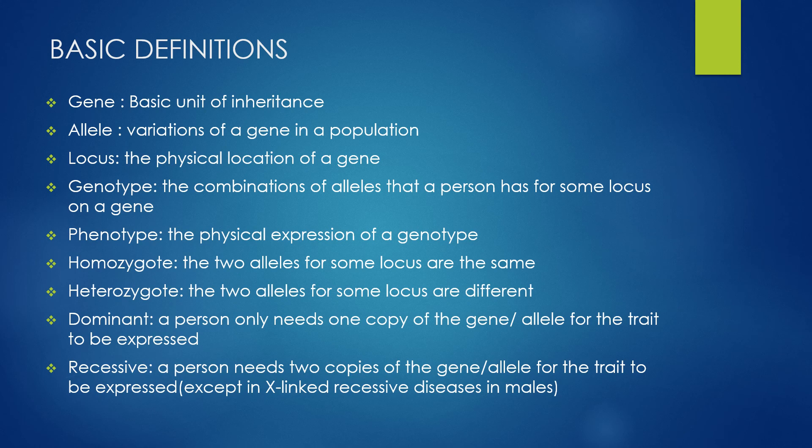Homozygote means that the two alleles for some locus are the same. Heterozygote, on the other hand, means that the two alleles for some locus are different. If a trait is referred to as dominant, it means that a person only needs one copy of that gene or allele for the trait to be expressed. Recessive means that a person needs two copies of the gene or allele for the trait to be expressed.